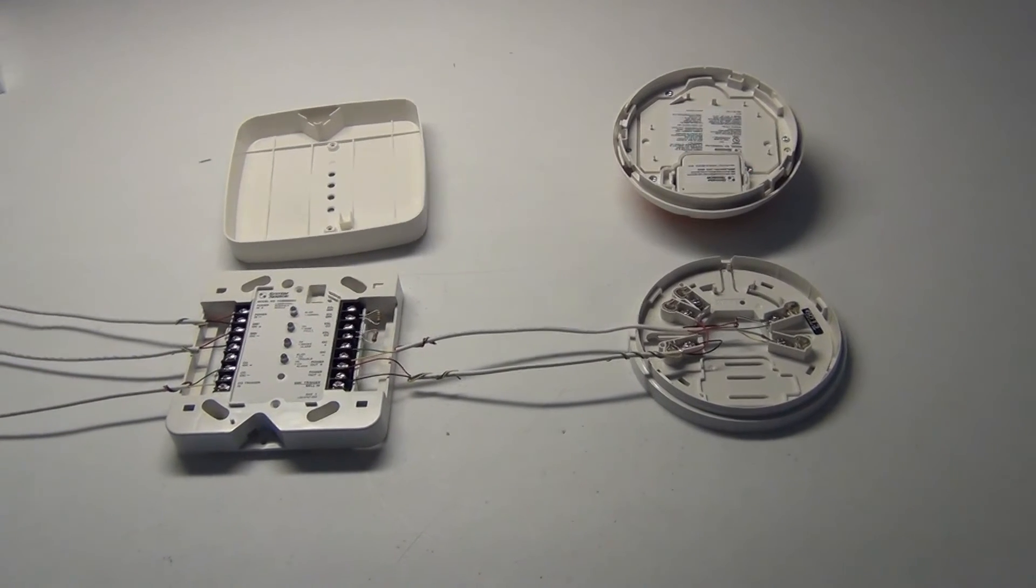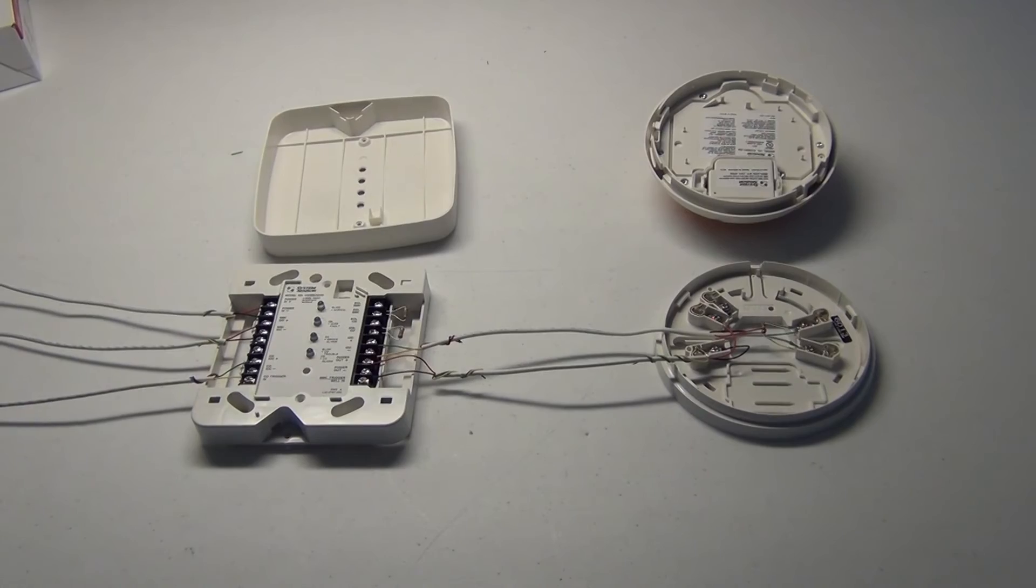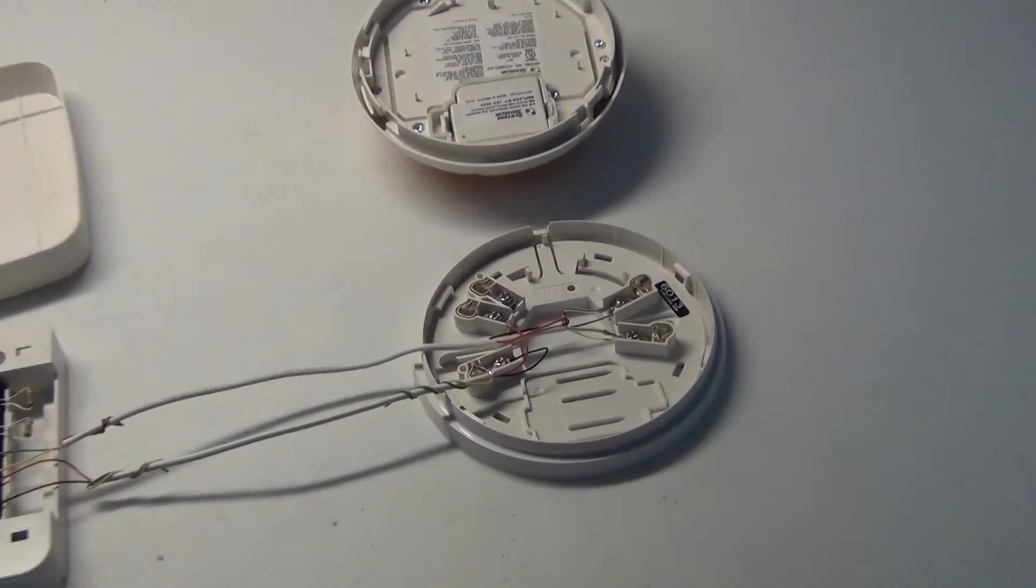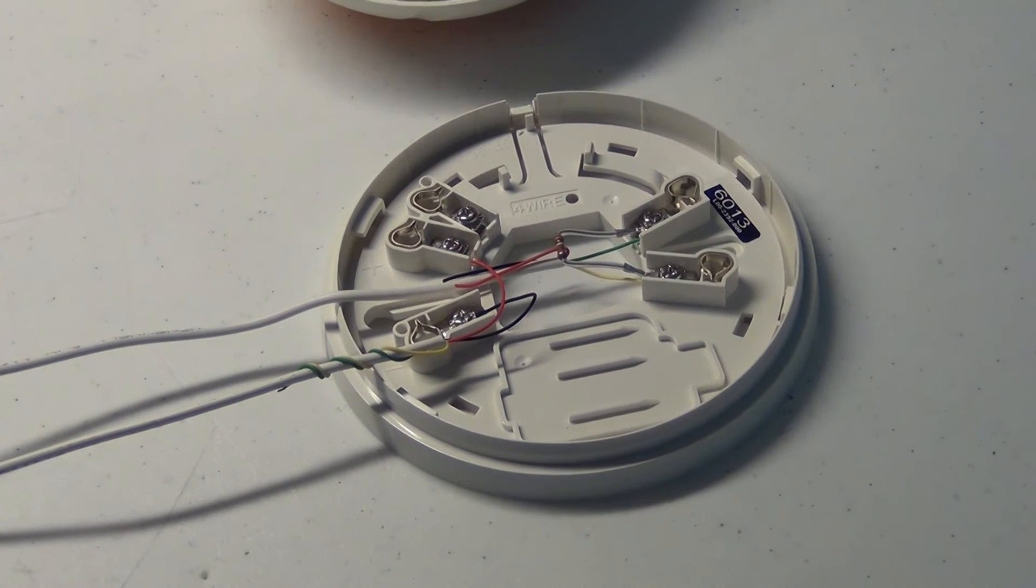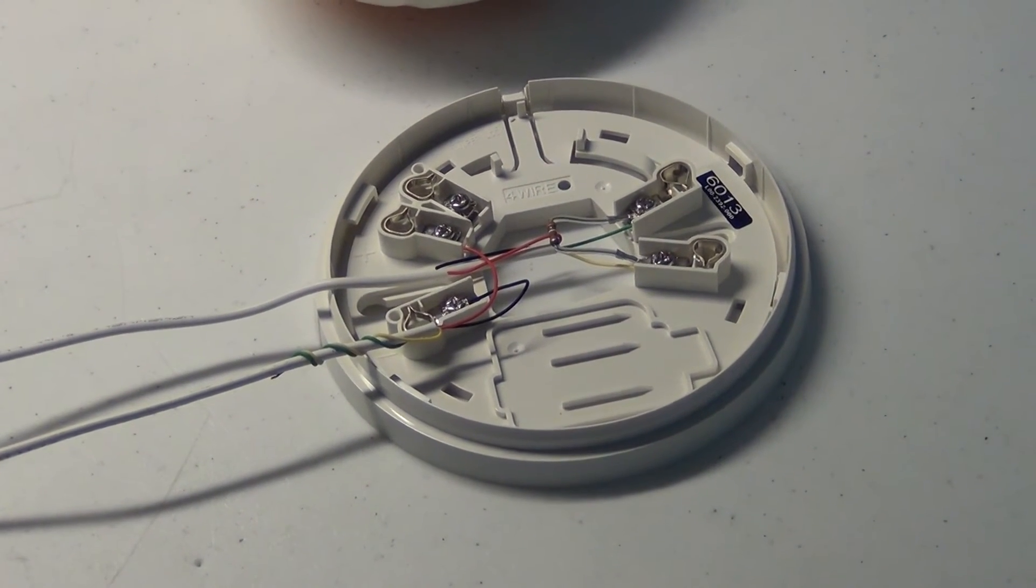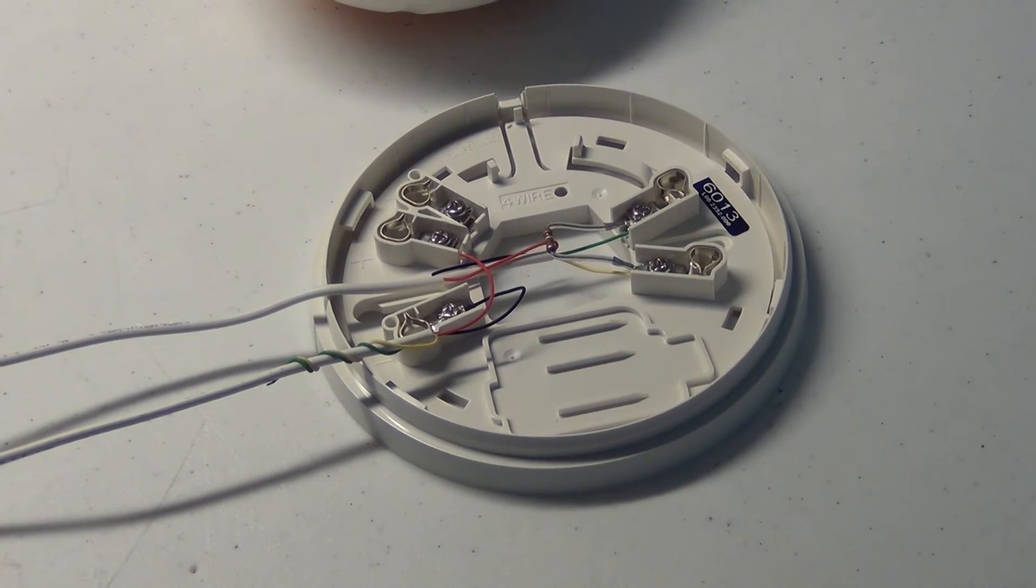So just keep that in mind if you've got more than 12 smoke CO combo units you're going to have to have two modules or more. Really handy with these smoke CO combo units is the base has all your wiring posts and whatnot. So you can just mount them up on the wall or the ceiling and wire them all together.